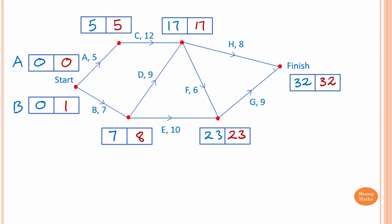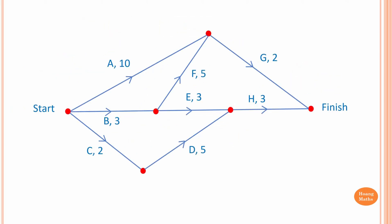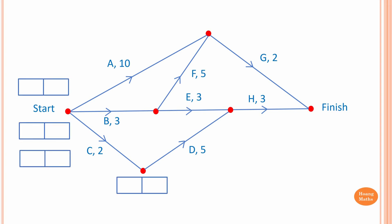For activity E, the earliest time you can start is 7 hours, because we need to complete activity B first. The latest time you can start on activity E is 8 hours. To complete the project, we need 32 hours — that is the minimum time. Please stop the video and do backward and forward scanning to work out the earliest and latest time to start each activity.